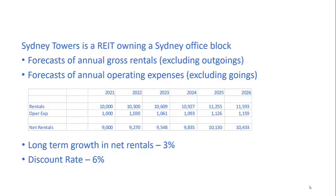At the end of the forecasting period I'm assuming there is a long-term growth rate for net rentals and a discount rate of six percent. I've chosen those numbers and I'm not going to discuss them in great detail, but that is actually part of the problem of applying fair value accounting — determining what those underpinning assumptions are.